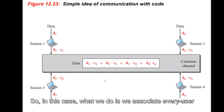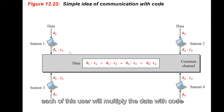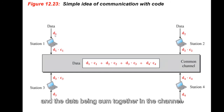What we do is we associate every user with a certain code, and before the transmission, each of these users will multiply the data with the codes. The code and the data are summed together in the channel.